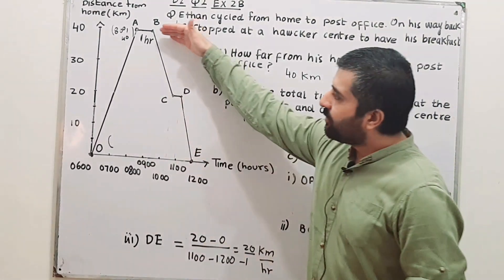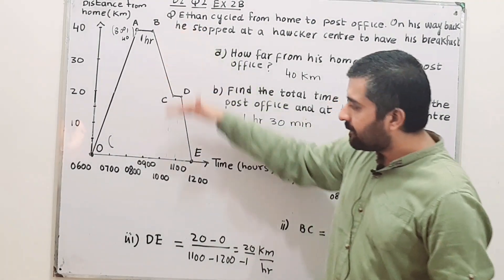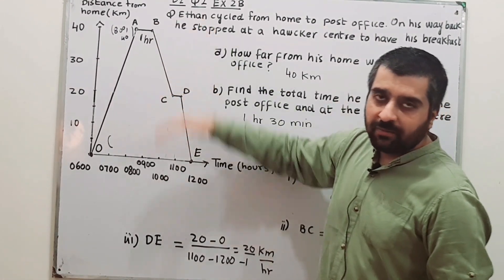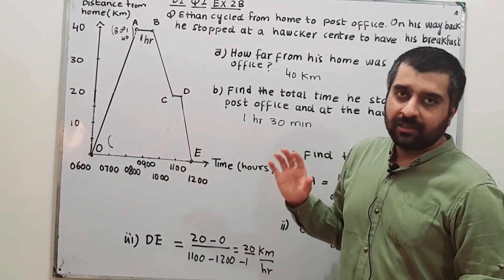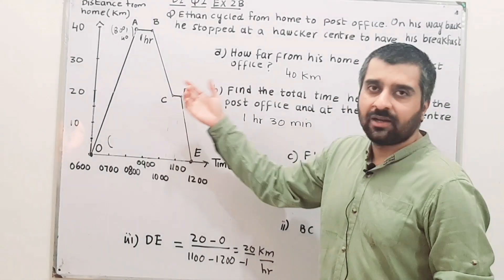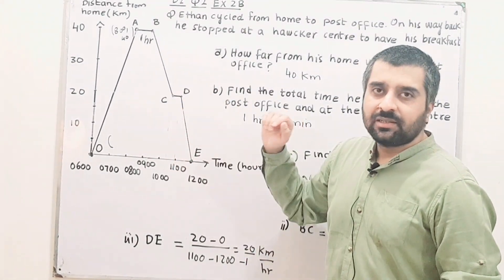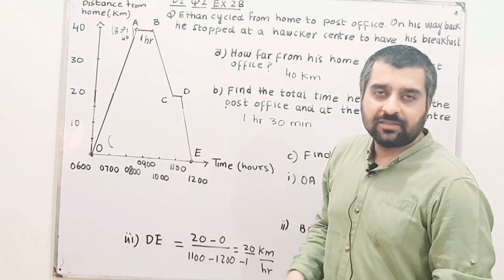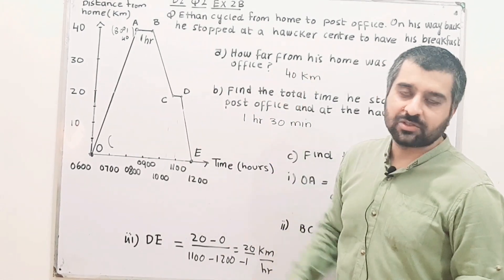From the post office, he came back, and during his way back he stopped over here again, shown by a horizontal line. Here he has his breakfast, as given in the question.